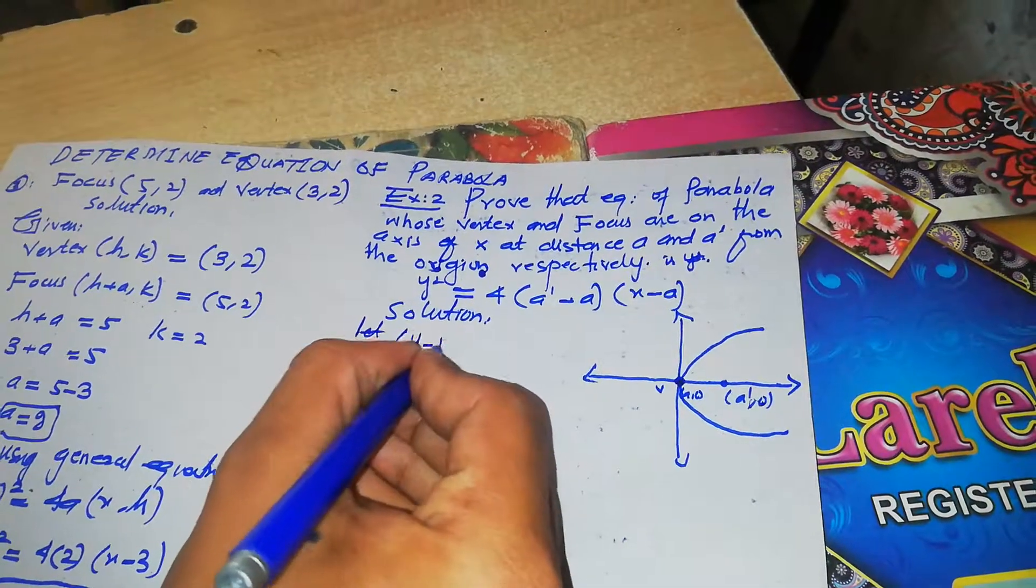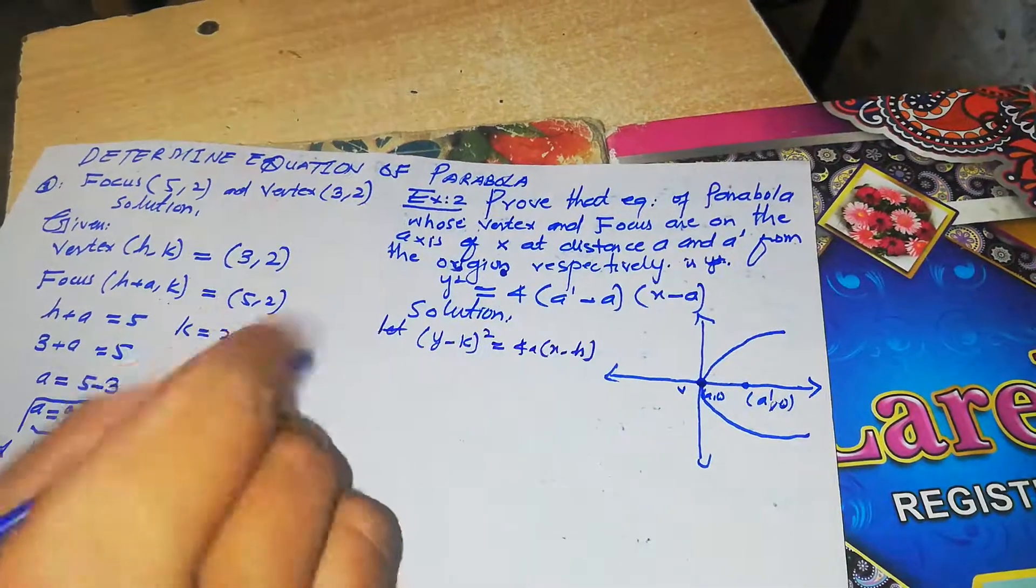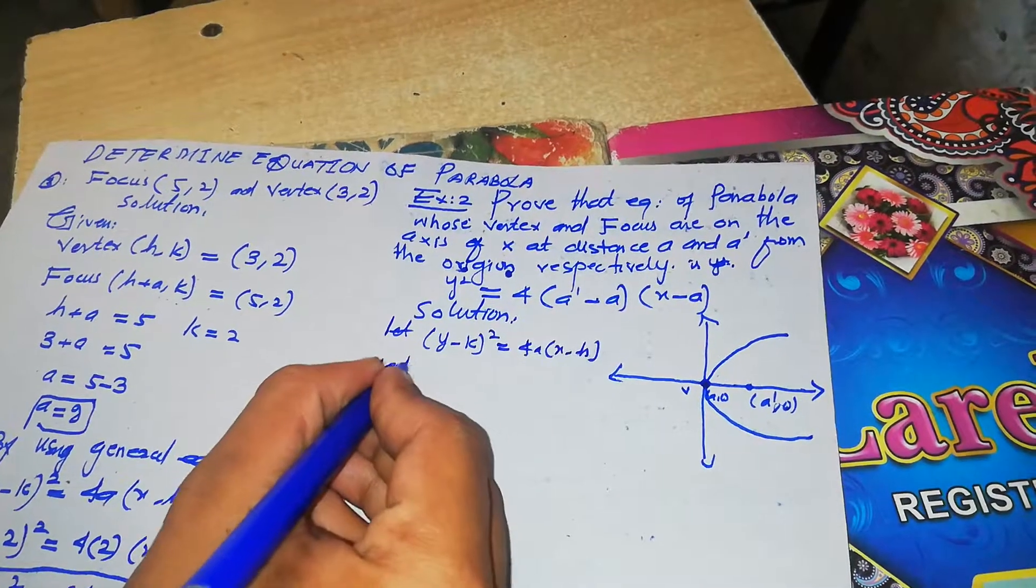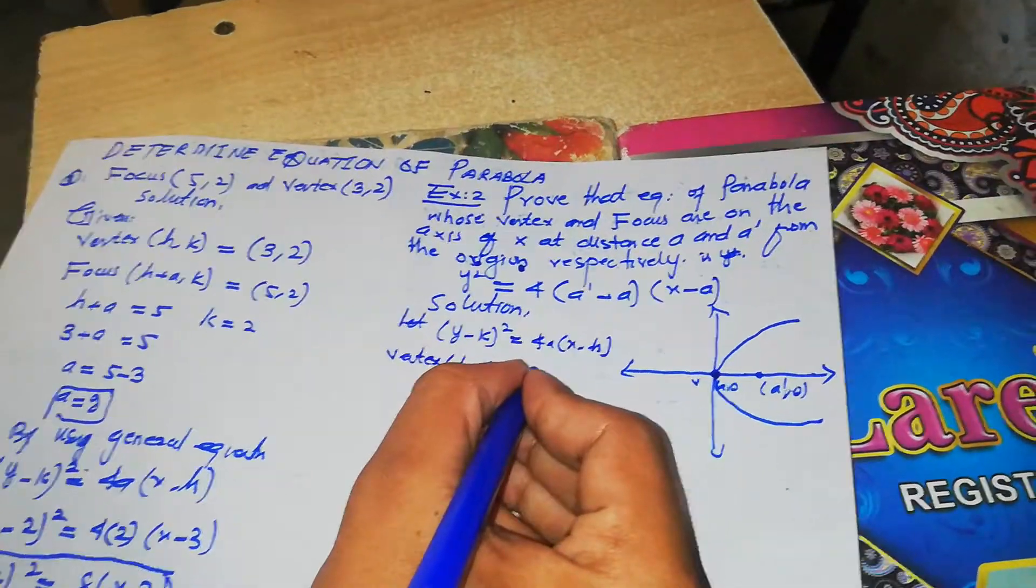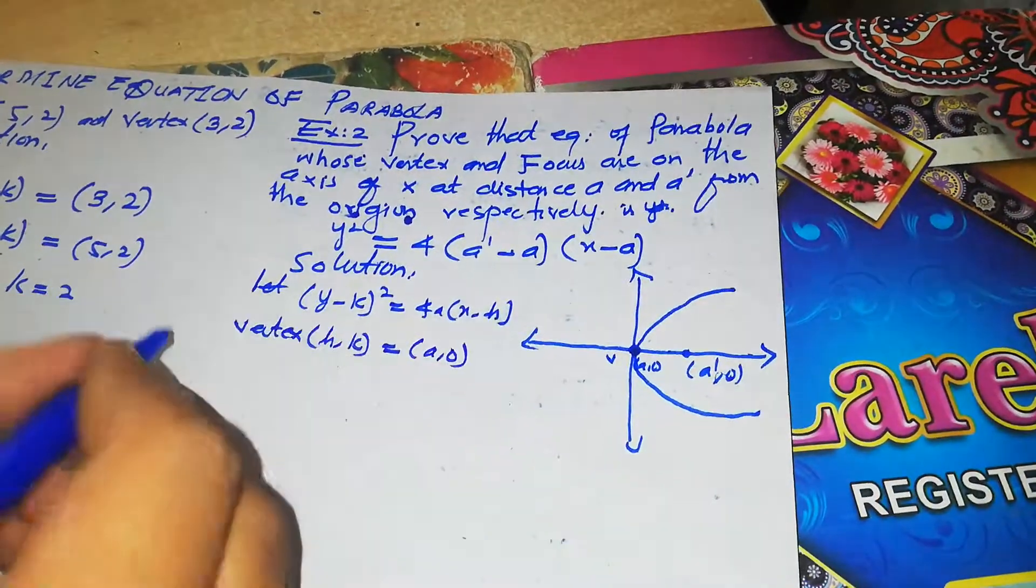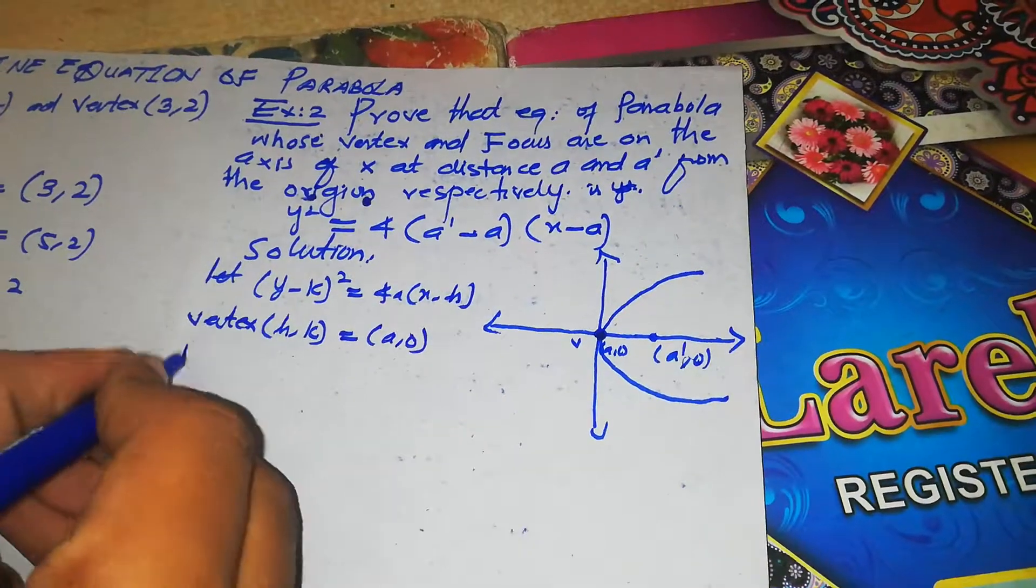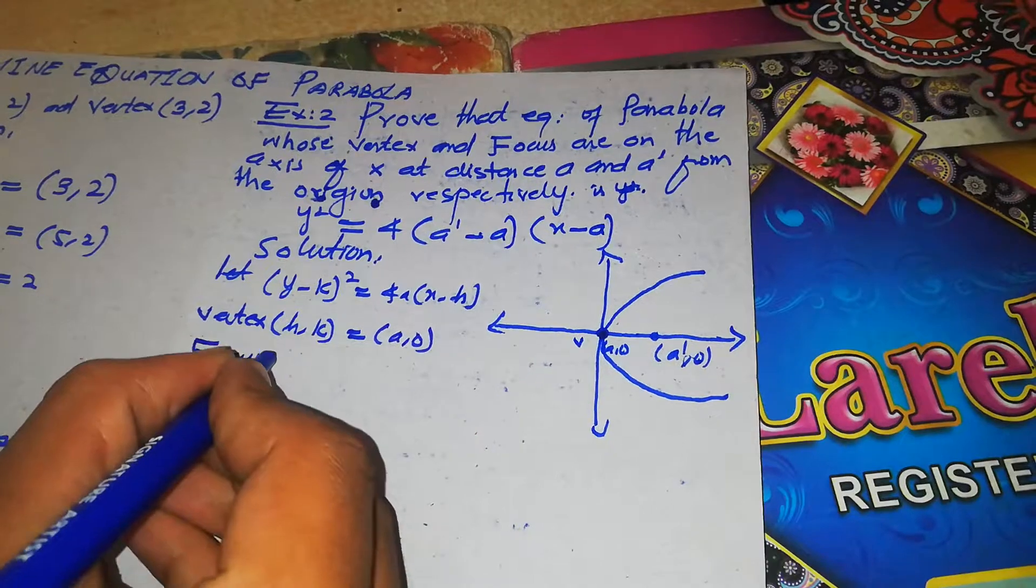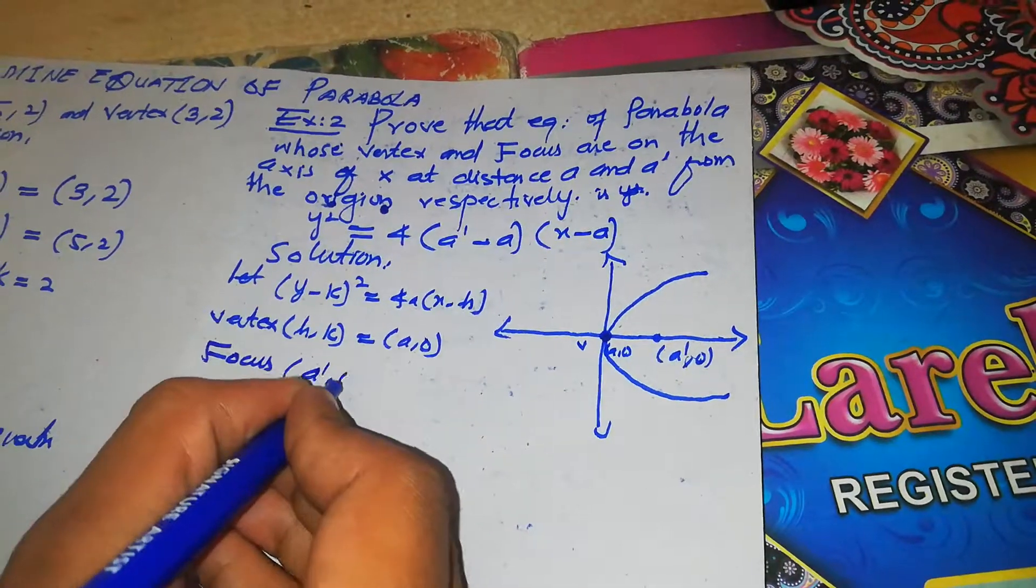The equation of the parabola is (y minus k) whole square equals 4a(x minus h). Now here the vertex given is (h, k) which is equal to (a, 0), and the focus given is (a prime, 0).